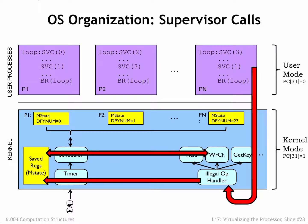This handler can access the user's registers in the temporary storage area or, using the appropriate OS subroutines, can access the contents of any user mode virtual address. If information is to be returned to the user, the return values can be stored in the temporary storage area, overwriting, say, the saved contents of the user's R0 register. Then, when the handler completes, the potentially updated saved register values are reloaded into the CPU registers and execution of the user mode program resumes at the instruction following the supervisor call.